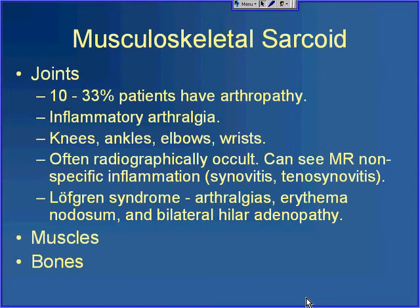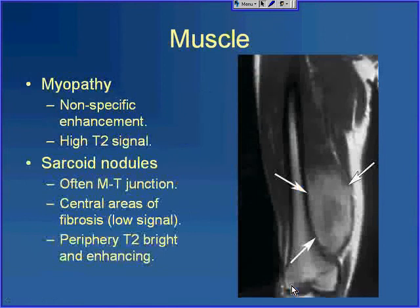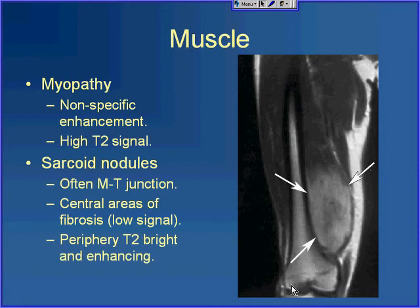Muscle involvement has two main forms. One is a nonspecific myopathy where you see high T2 signal — hyperenhancing edema in the muscle. The second form is sarcoid nodules, which are quite rare. These tend to occur at the musculotendinous junction. They have a central area of fibrosis, which is low signal on all sequences, with a periphery of enhancement and edema — bright on T2 and bright on post-contrast imaging.